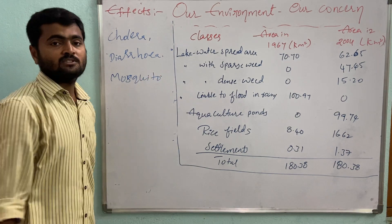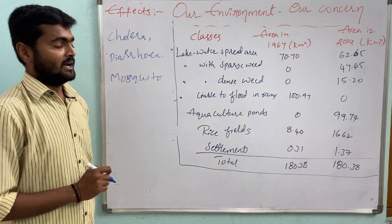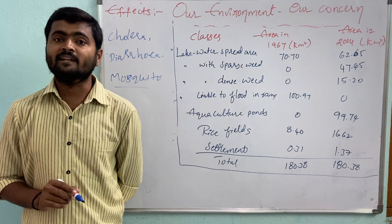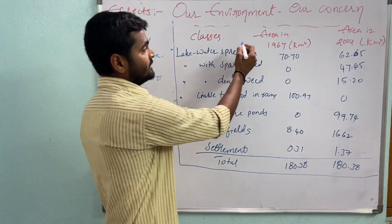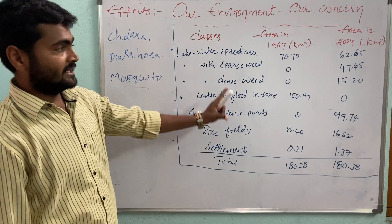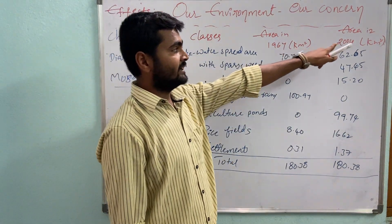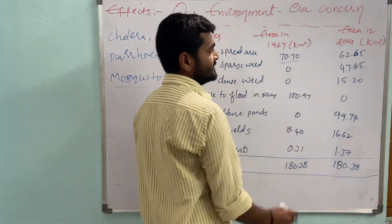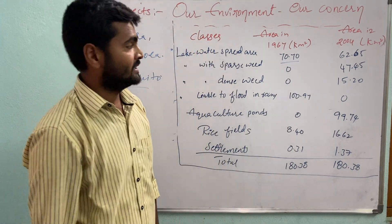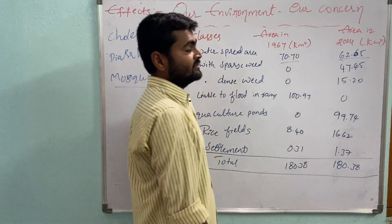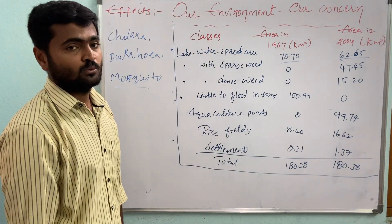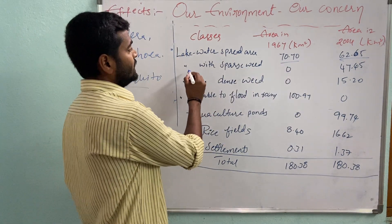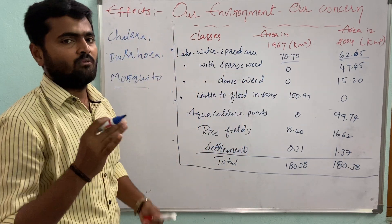Vector-borne diseases spread through insects like mosquitoes and houseflies because people lacked awareness about water contamination. A case study data table compares Kolleru Lake in 1967 and 2004, showing that the lake water-spreading area reduced from 70.70 square kilometers to 62.65 square kilometers by 2004.